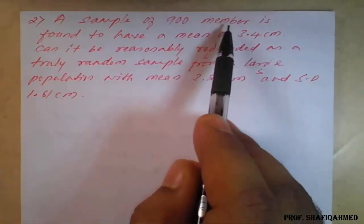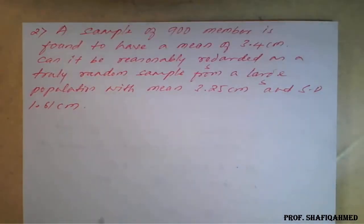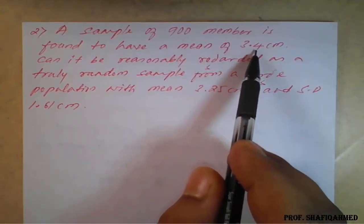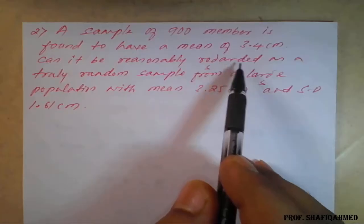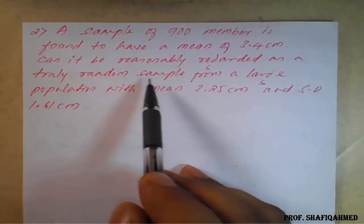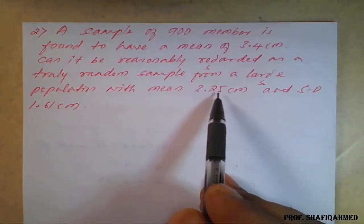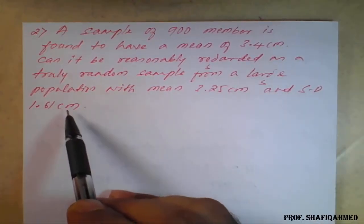The next example is a sample of 900 members found to have a mean of 3.4 cm. Can it be reasonably regarded as truly random sample from a large population with mean 3.25 cm and standard deviation 1.61 cm?